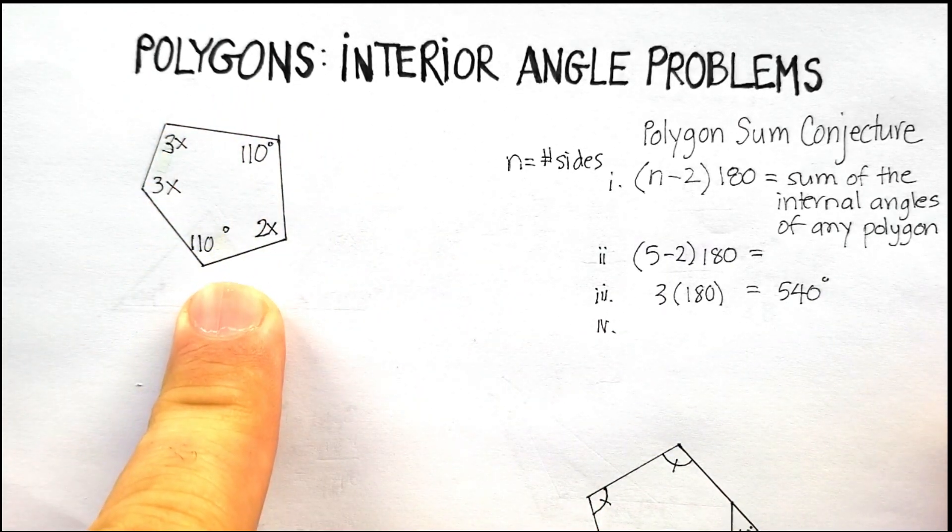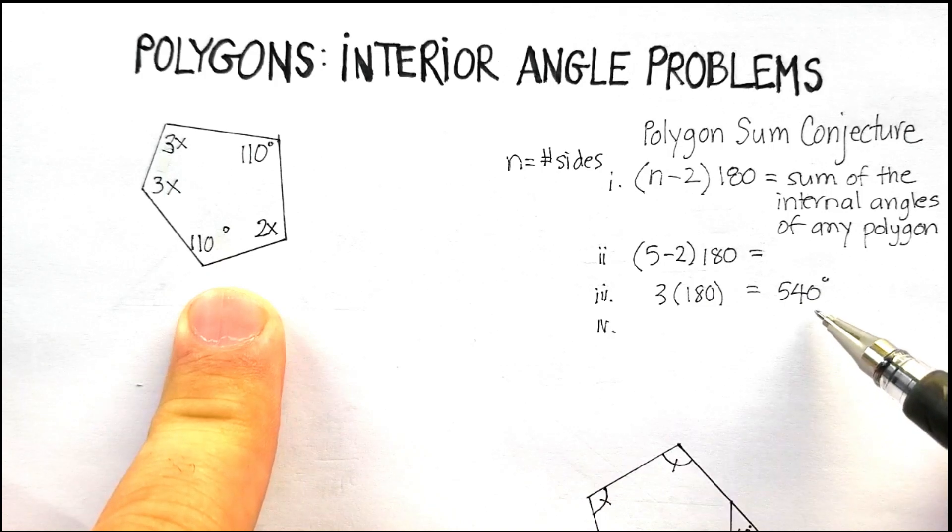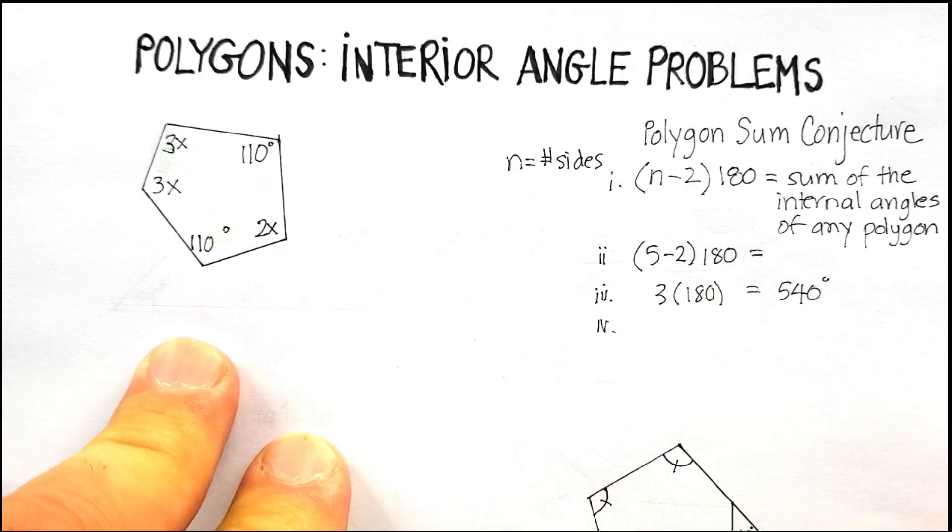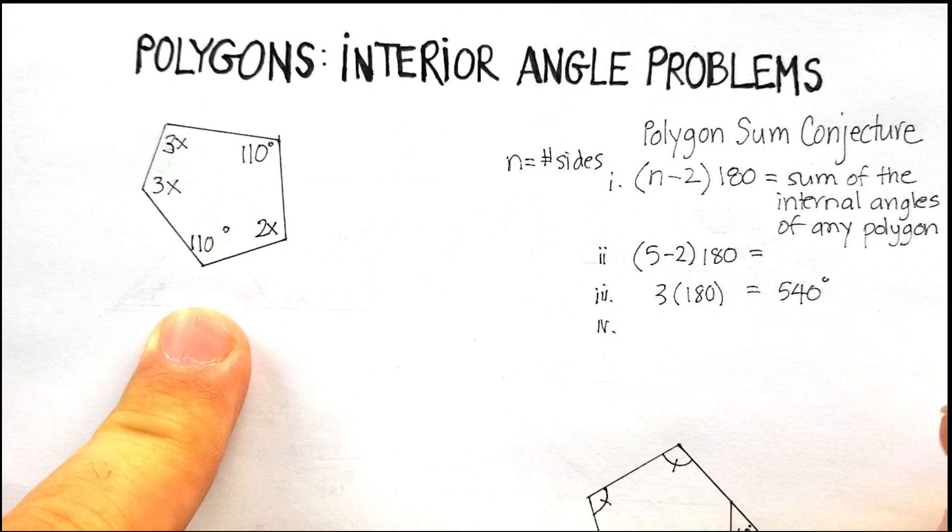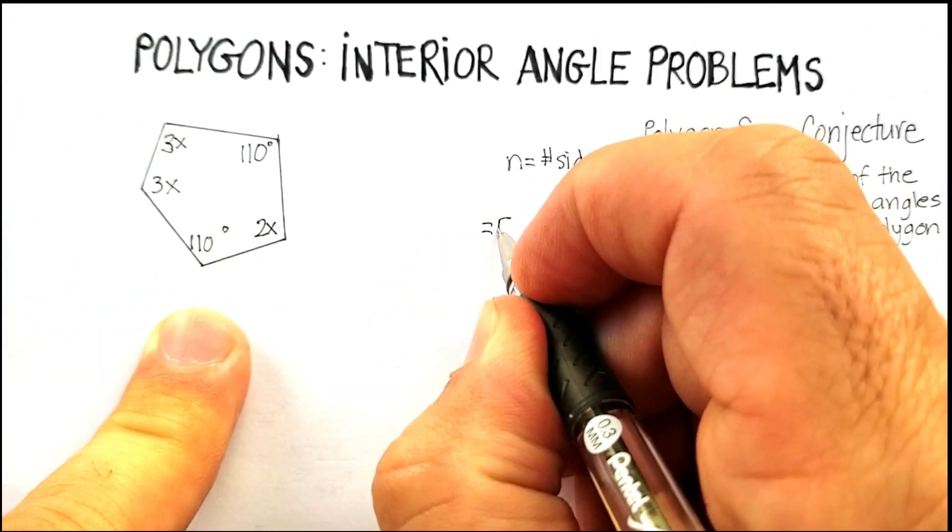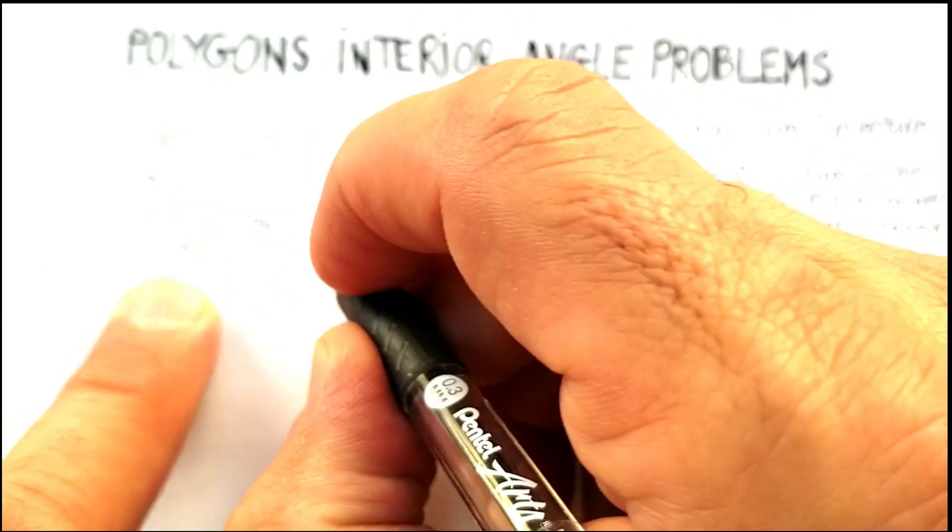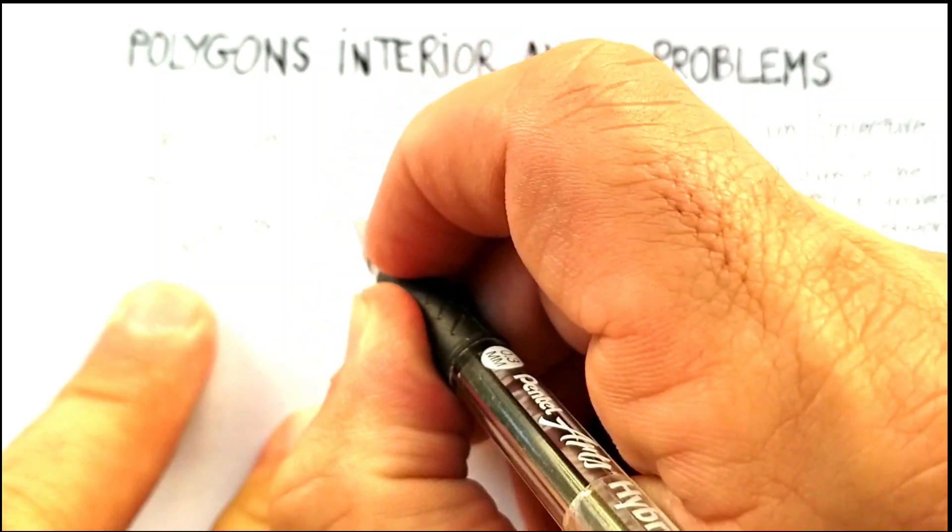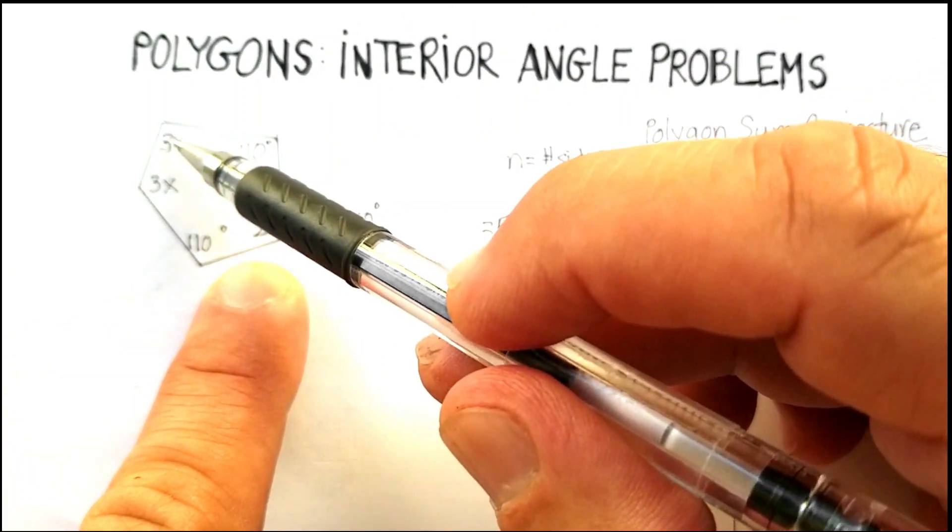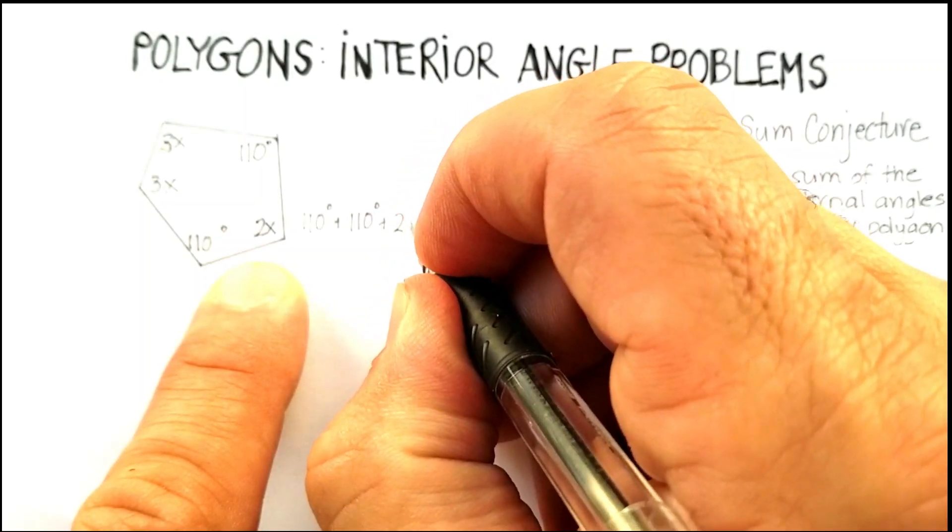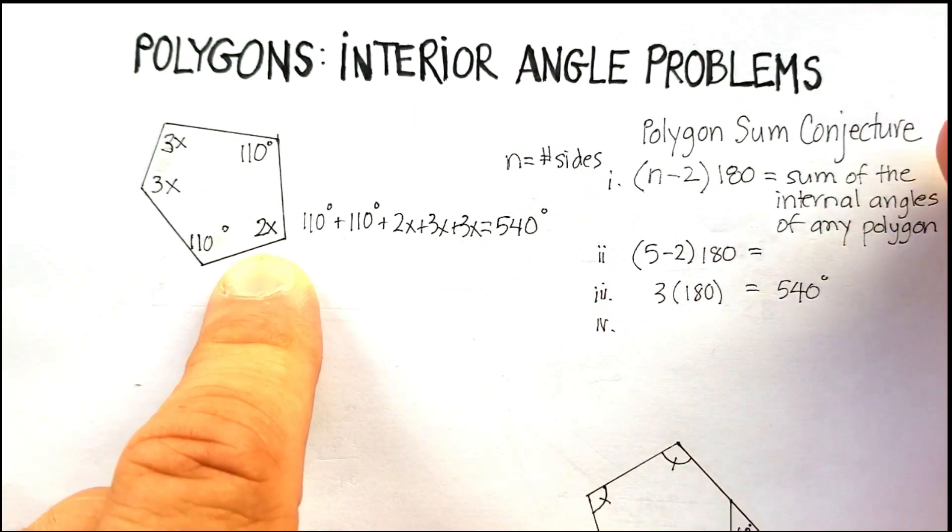So now I know in this particular polygon that if we were to add all of these internal angles, it should equal 540 degrees. So now I can move over to this polygon and actually solve for one of the x's and therefore figure out what each of these angles would be. I have a 110 and a 110, so I'm just going to add 110 plus 110 plus 2x plus 3x plus 3x.